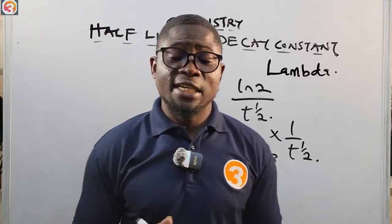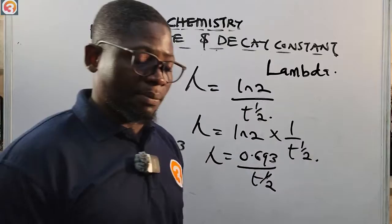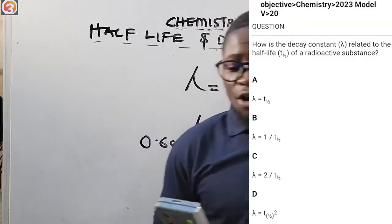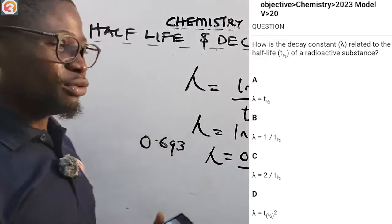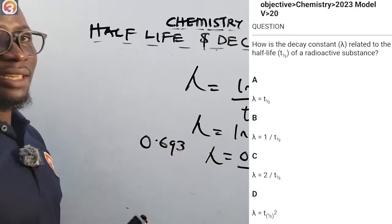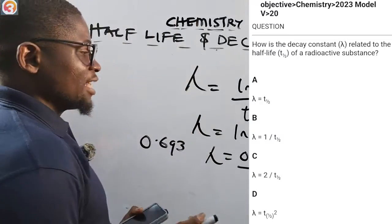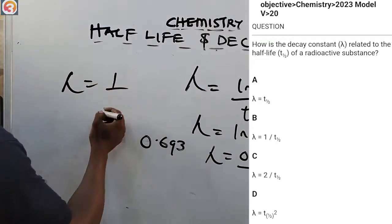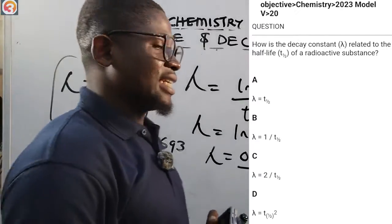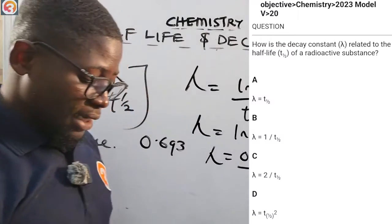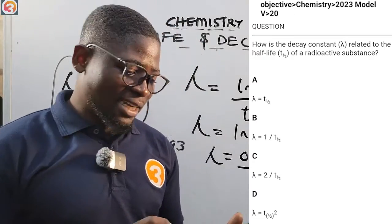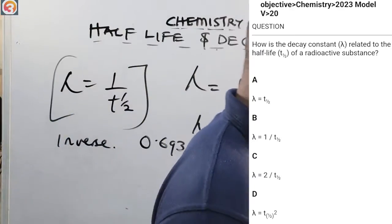Returning to the 2023 question number 20: how is the decay constant lambda related to the half-life? Since they have an inverse proportionality, the correct answer is option B — lambda equals 1 over t-half. A second question from 2022 number 20 asks: 'Dash of a radioactive element is the time taken for half of the total number of atoms in a given sample to decay.' The correct answer is B — the half-life.